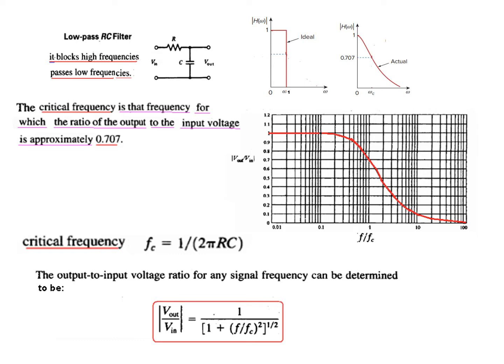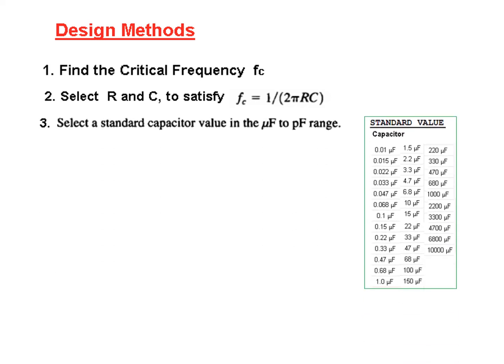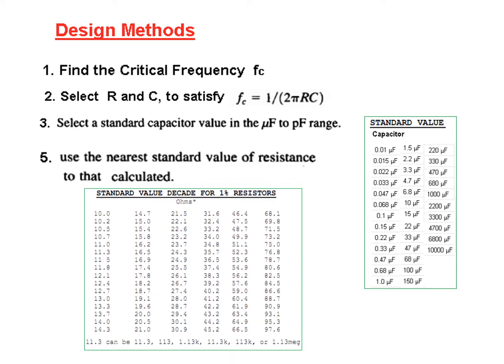The design method is: first, find the critical frequency fc; then select a standard capacitor from the list of standard capacitor values; then calculate R using the formula. The resistance value obtained must be checked — it should not be less than 1 kΩ and should not be greater than 1 MΩ; otherwise, we have to redesign and try a different capacitor value.